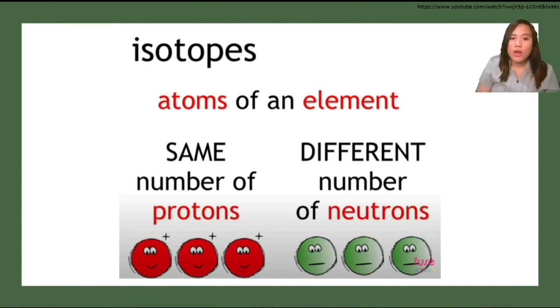Next we have isotopes. Isotopes are atoms of the same element that have the same number of protons but different number of neutrons. Usually, protons and neutrons have the same number, but there are times or elements where the number of neutrons is different, and those elements are examples of isotopes. How can we distinguish them? How can we compute it?